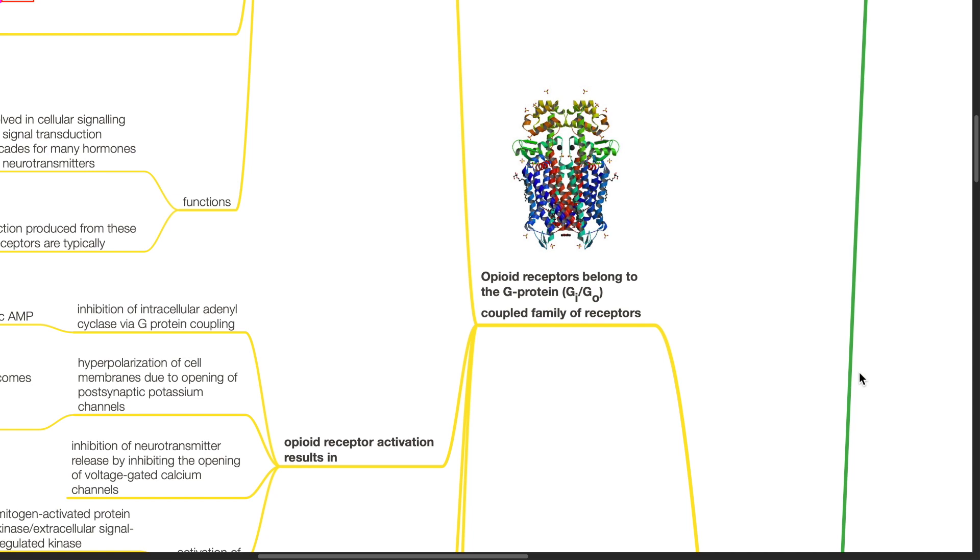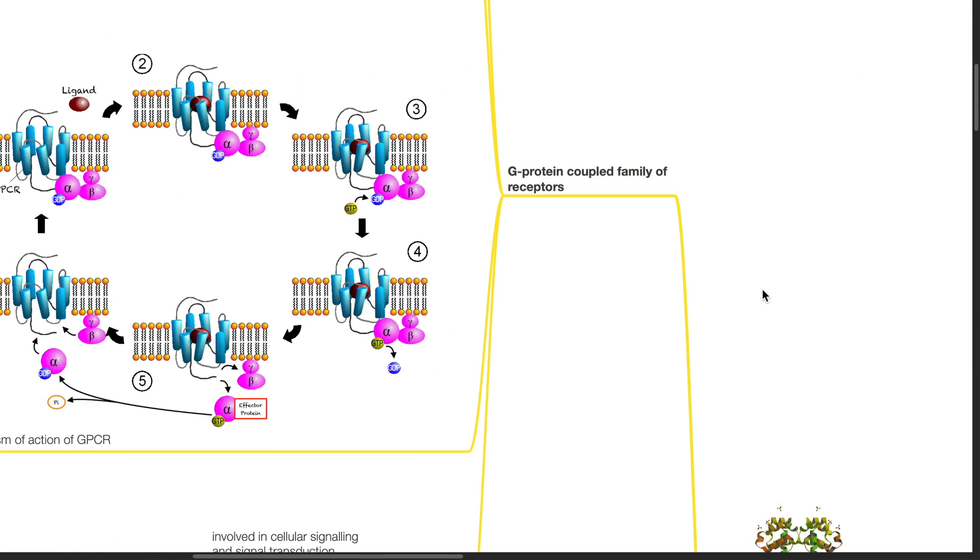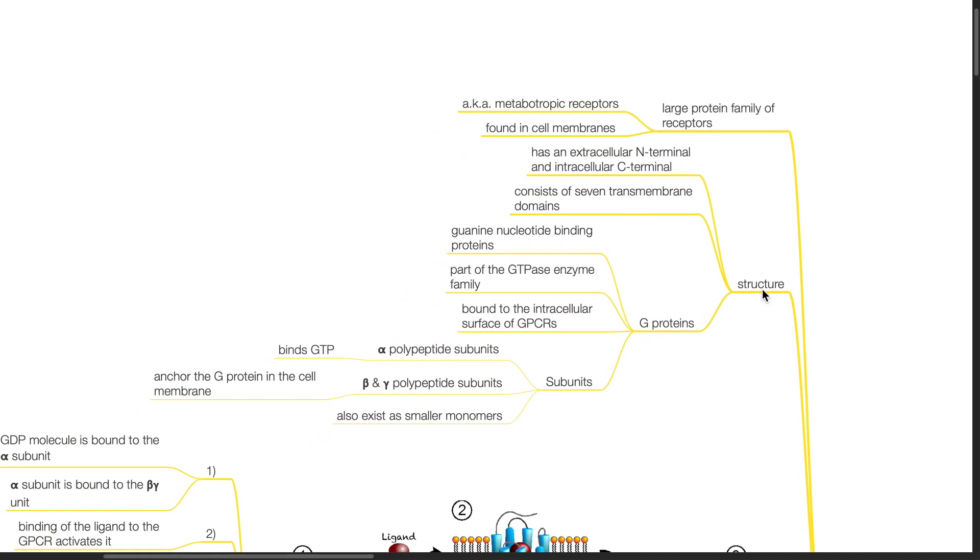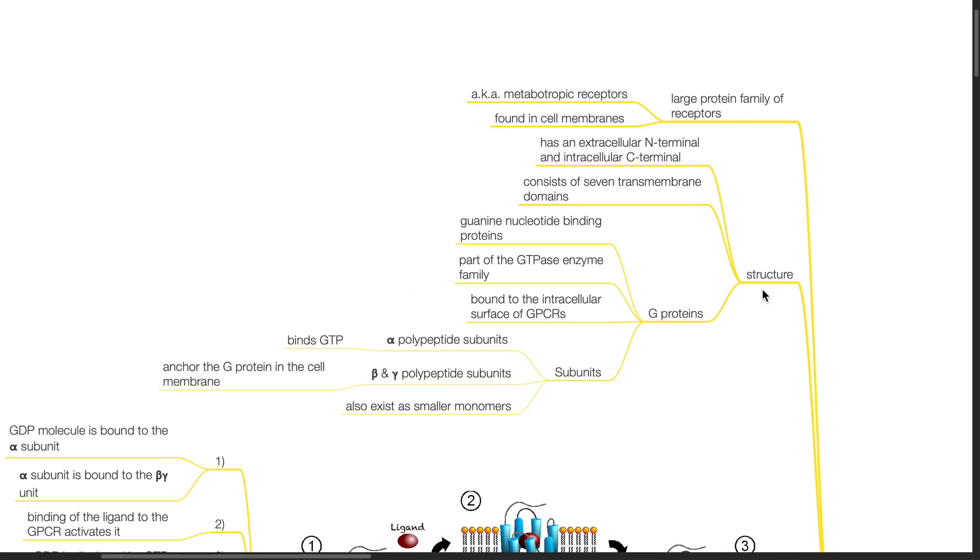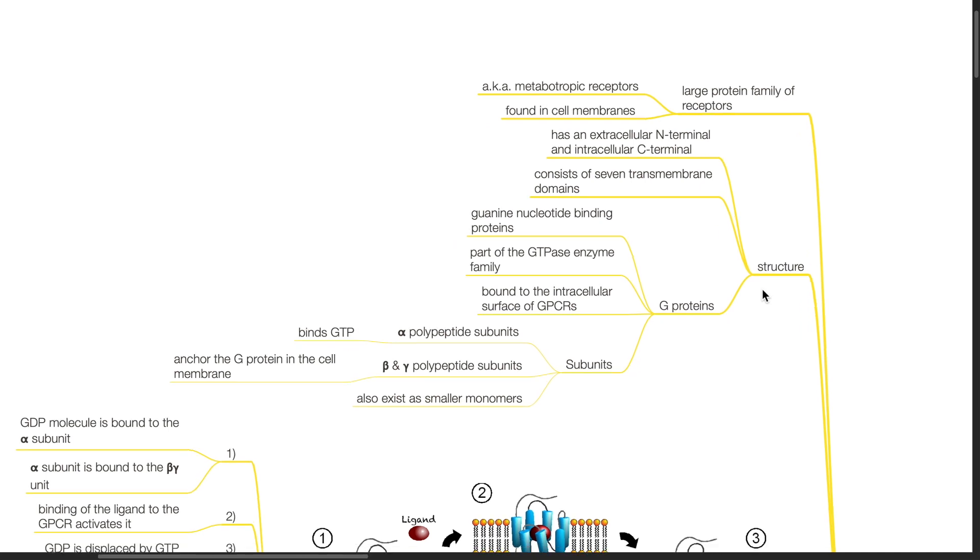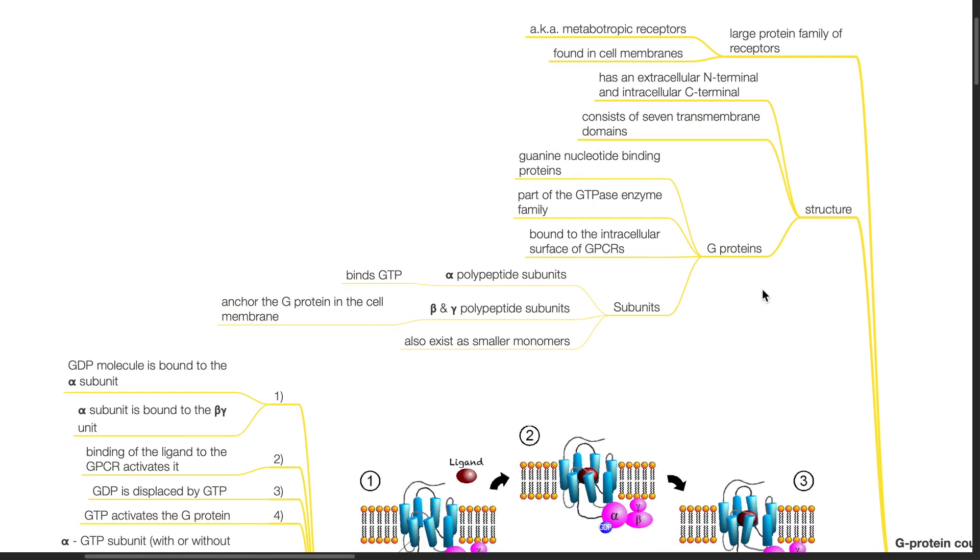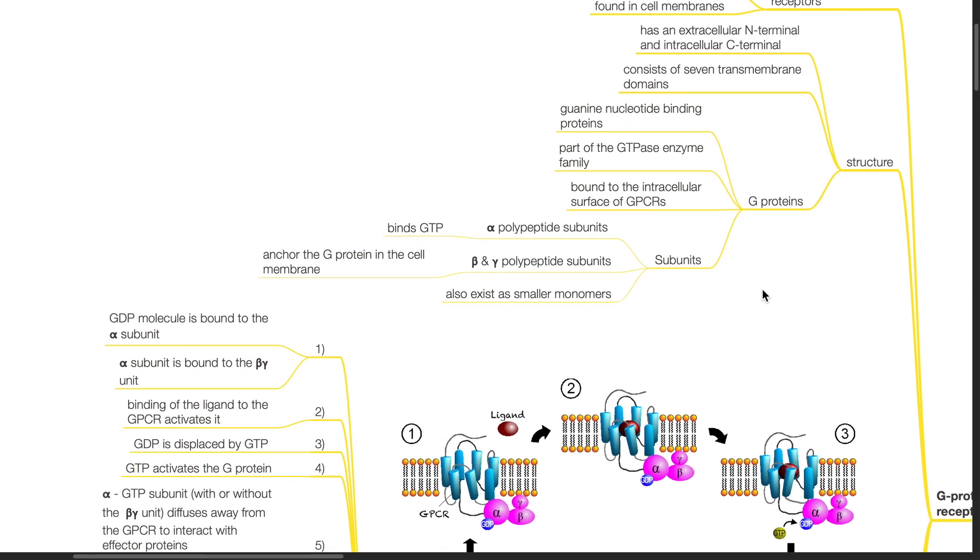Opioid receptors belong to the G-protein, Gi or Go coupled family of receptors. G-protein coupled family of receptors are a large protein family of receptors also known as metabotropic receptors found in cell membranes. These receptors have an extracellular N-terminal and intracellular C-terminal and consist of seven transmembrane domains. G-proteins are guanosine nucleotide binding proteins. They form a part of the GTPase enzyme family. They are bound to the intracellular surface of GPCRs. Subunits of G-proteins include alpha polypeptide subunit which binds to GTP, and beta and gamma polypeptide subunits which anchor the G-protein inside the cell membrane.